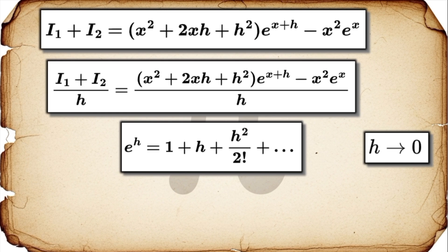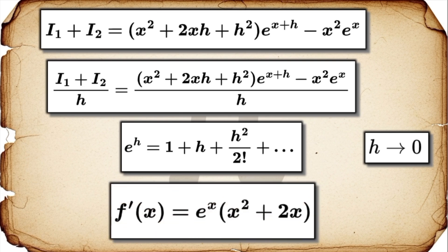So we substitute that series in, we multiply everything out, and then we divide the entire expression by h. And this is where the magic happens. As we finally let h go to zero, every single term that still has an h in it just vanishes. They all go to zero. And what are we left with? We're left with e to the x times the quantity x squared plus 2x. And if you check, that is exactly the answer you get from the standard product rule. It works. It's a lot more work, but it works perfectly.